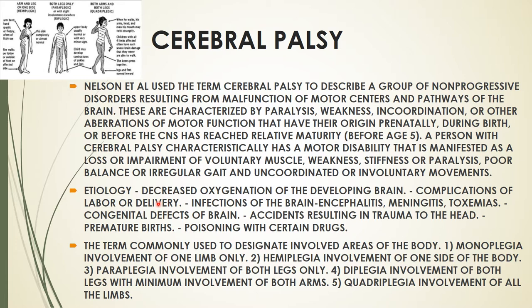If there are any problems with the development of the brain, this can lead to cerebral palsy. There are some terms related to cerebral palsy. First is monoplegia — involvement of one limb only. Then hemiplegia is involvement of one side of the body, where there can be weakness or paralysis on one side.